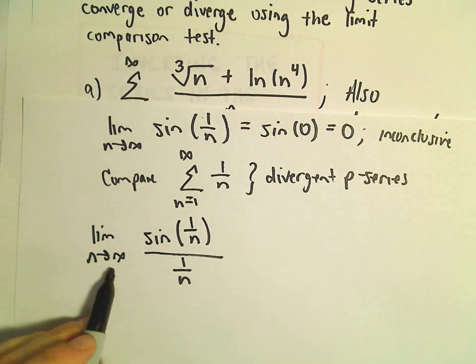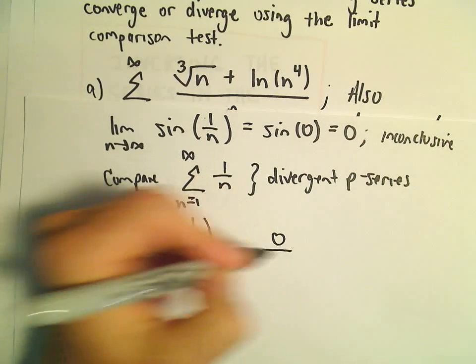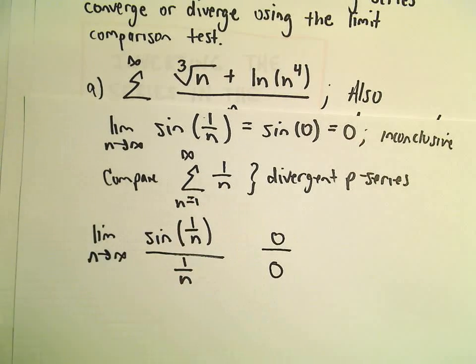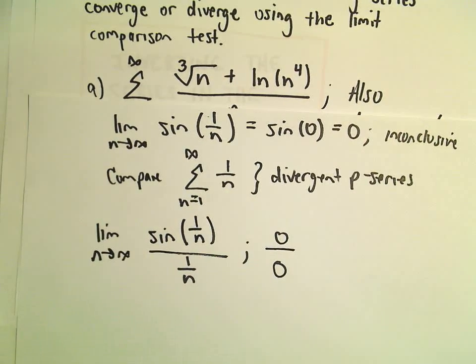But again, as n goes to infinity, we said sine of 1 over n is going to go to 0. 1 over n is going to go to 0. So we can use L'Hopital's rule on this.